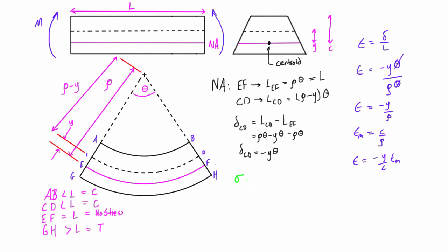Because of Hooke's Law — axial stress equals modulus of elasticity times strain — the longitudinal normal stresses also vary linearly with distance from the neutral axis. We can write that the stress at any point is equal to negative M times y over I, where M is the internal moment and I is the moment of inertia.